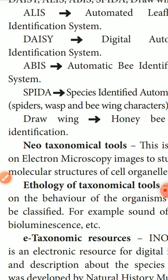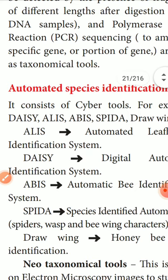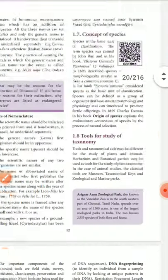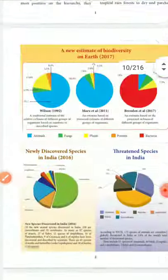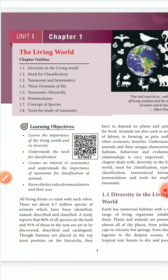Using these tools, we can search and see what nomenclatures are there and which animals are classified or not yet classified. This finishes the lesson on the Living World. Topics covered include: diversity of the living world, needs of classification, taxonomy and systematics, three-domain life, seven-kingdom classification, taxonomic hierarchy, nomenclature, binomial and trinomial nomenclature, concept of species, and tools for the study of taxonomy. Thank you, children.